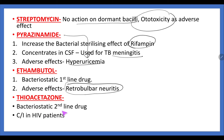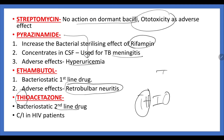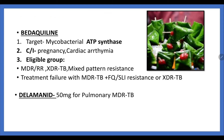Thiacetazone is a bacteriostatic second-line drug. One important thing to remember is that it is contraindicated in HIV. Think of it as: Thiacetazone — TH1 cells go down in HIV to near zero, so Thiacetazone should not be given in HIV patients. It causes severe rash and inflammation.